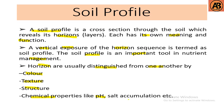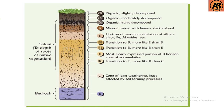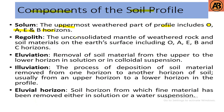There are some components of the soil profile, such as solum, regolith, and eluviation. Solum is the uppermost weathered part of the profile and includes the O, A, E, and B horizons. Here we can see a soil profile showing the O horizon, A horizon, E horizon, B horizon, and C horizon. The O, A, E, and B horizons together are known as the solum.